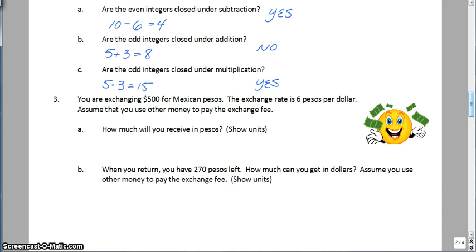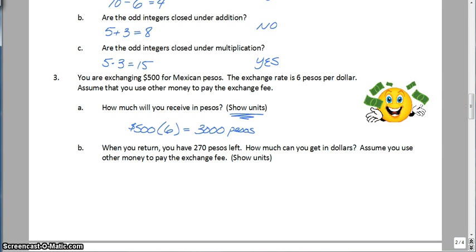Okay, so moving on to number 3. You're exchanging $500 for Mexican pesos. The exchange rate is 6 pesos per dollar. Assume that you use other money to pay for the exchange fee. So how much will you receive in pesos? All you have to do is multiply your $500 times 6 pesos per dollar, and you get 3,000 pesos. Remember to show your units in this class. If you don't show your units when necessary, you will lose points. So when you return, you only have 270 pesos left. How much will you get back in dollars? You take your 270 pesos, and we are going to divide that by 6 this time, because it takes 6 pesos to make a dollar, and we will have 45 dollars.